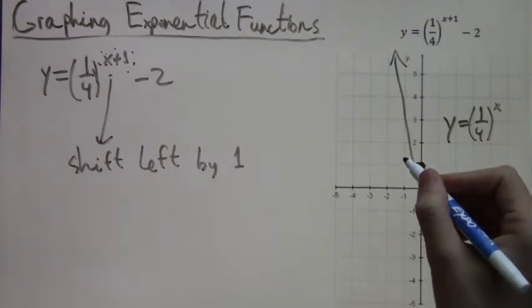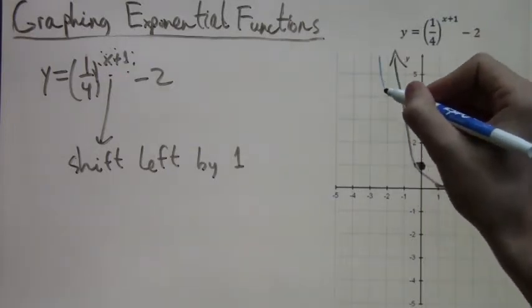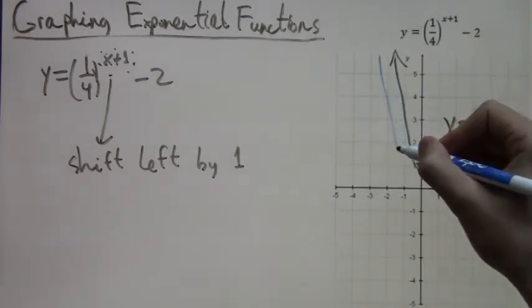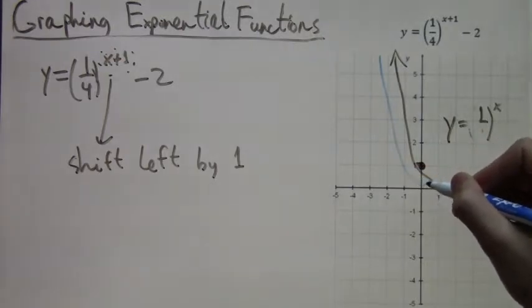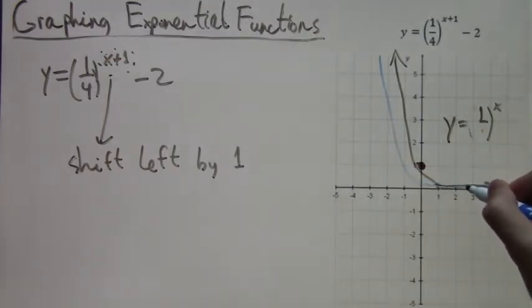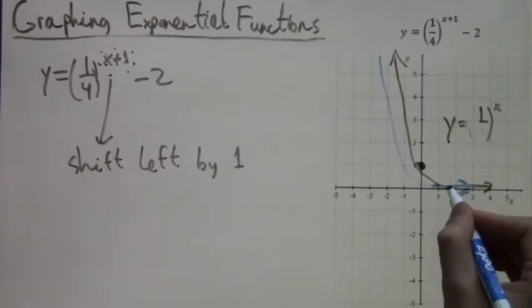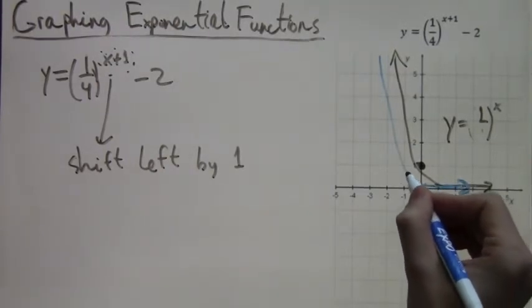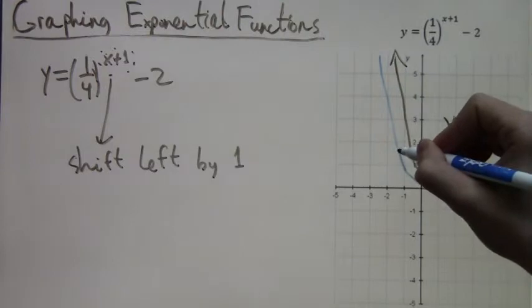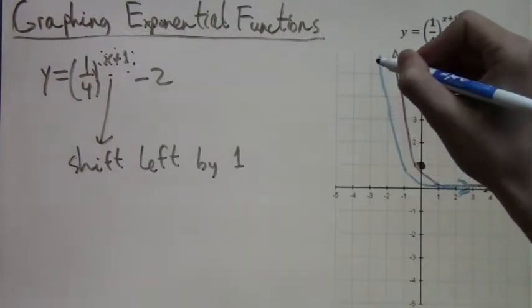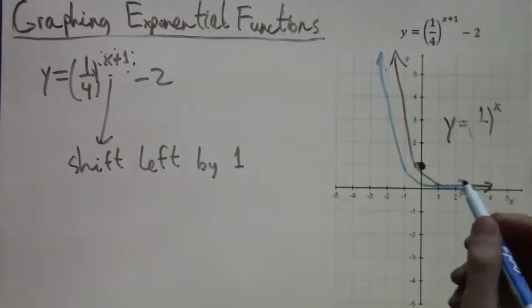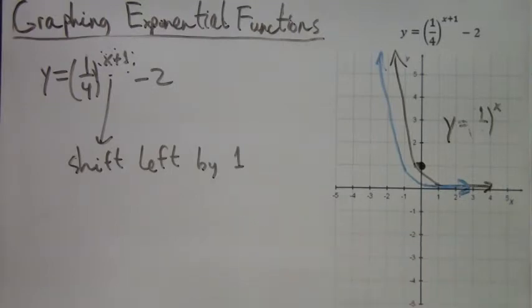But first, it's easier to graph one shift at a time. So I'm shifting this whole graph one to the left. And I'm doing it in blue ink. Notice, since we're shifting to the left, it's a left-right sort of shift. We're still getting really close to zero. But the rest of the graph is still shifted to the left. Alright, so now we've done the shift to the left.